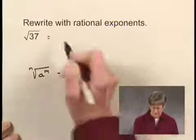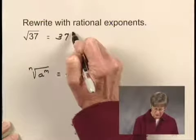So we can write the square root of 37 as 37 to the one-half power.